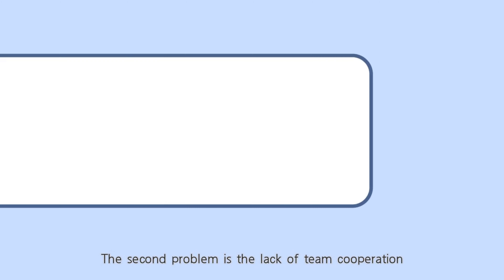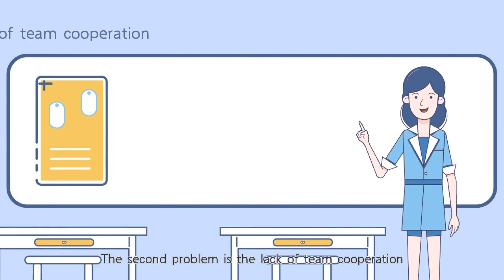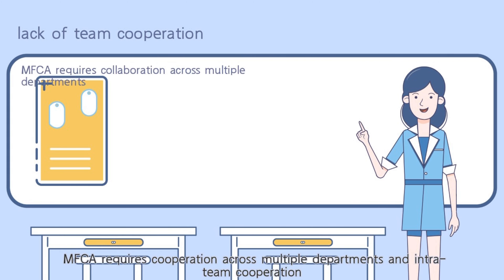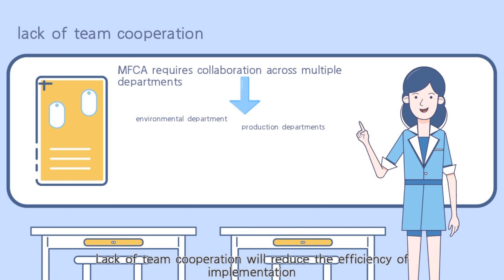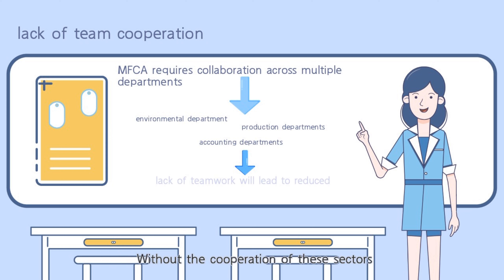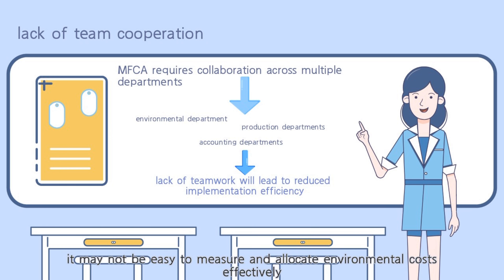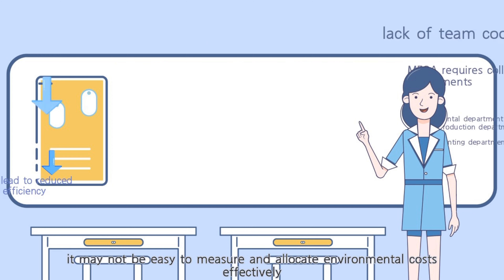The second problem is the lack of team cooperation. MFCA requires cooperation across multiple departments and intra-team cooperation. Lack of team cooperation will reduce the efficiency of implementation. Without the cooperation of these sectors, it may not be easy to measure and allocate environmental costs effectively.